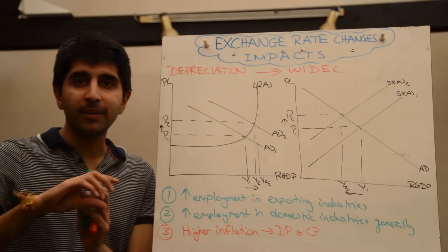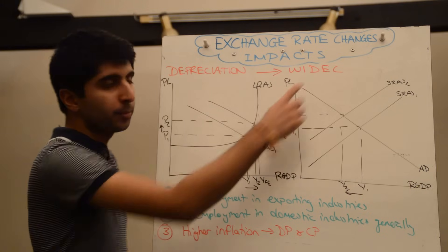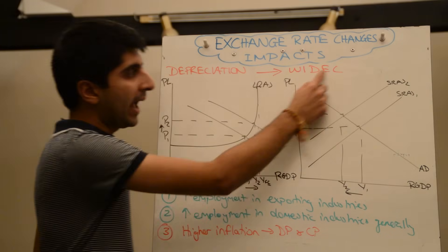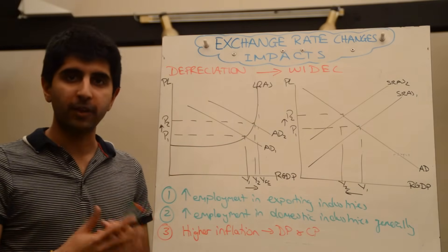Why? Because it means that X minus M in the aggregate demand equation may well increase. With imports more expensive, demand for imports falls, expenditure on imports falls. Exports cheaper, demand for exports goes up.